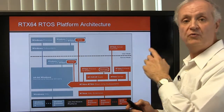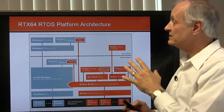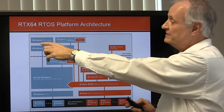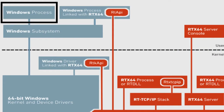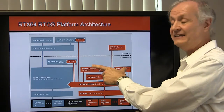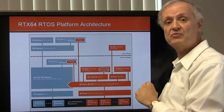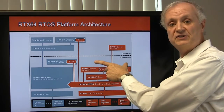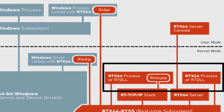We turn our focus to four processing types of applications. The first is a Windows process — a pure Windows process that you would find in almost any implementation. The second is an RTX 64 process, where you spend your design time achieving your real-time performance.